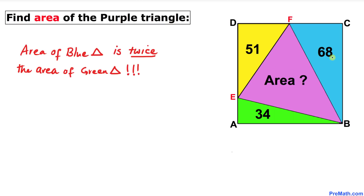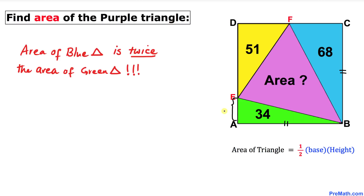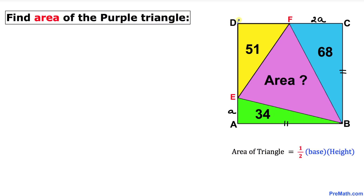We can see that the area of the blue triangle is two times the area of the green triangle. Recall the area of a triangle formula: area equals one-half times base times height. Since the lengths are equal within square ABCD, if side AE is 'a', then side length CF is going to be two times 'a'. Now let's suppose this side length is t times 'a', where t is some constant.